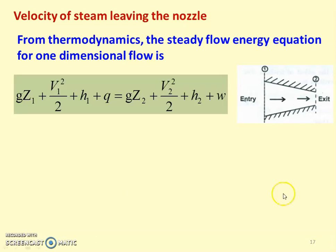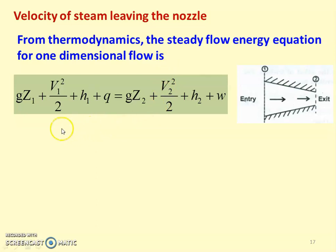We consider the nozzle. The entry section is represented by 1 and the exit section is 2, and steam is flowing. From thermodynamics, the steady flow energy equation for one-dimensional flow is: g·Z1 + V1²/2 + H1 + Q = g·Z2 + V2²/2 + H2 + W.